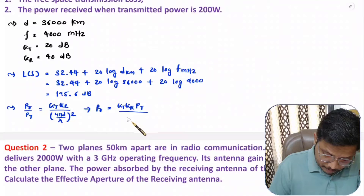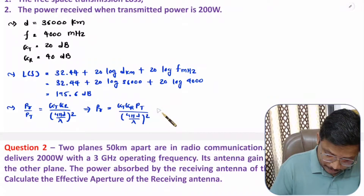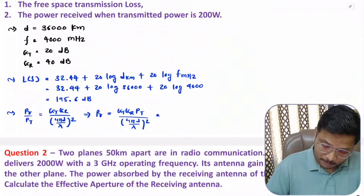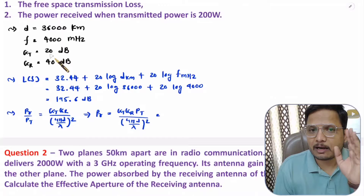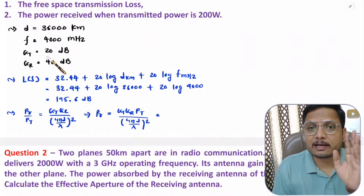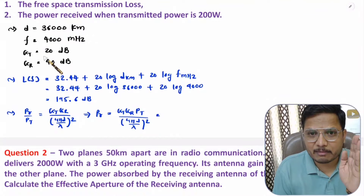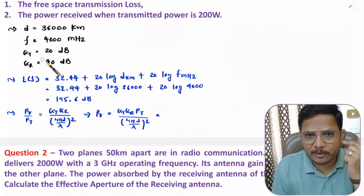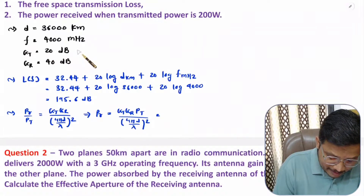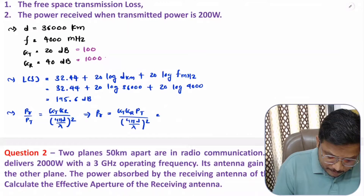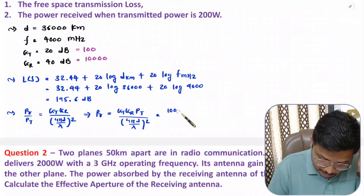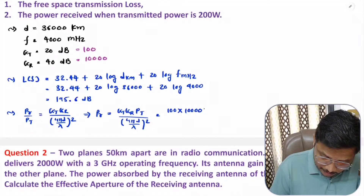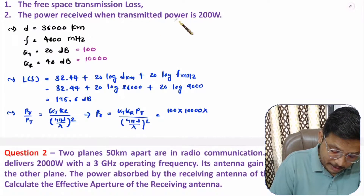Now substituting values: Gt and Gr are given in dB — 20 dB means 100, and 40 dB means 10,000. So Gt = 100 and Gr = 10,000. Transmitted power Pt = 200 watts. Distance d = 36,000 km, which must be converted to meters: 3.6 × 10⁷ meters.